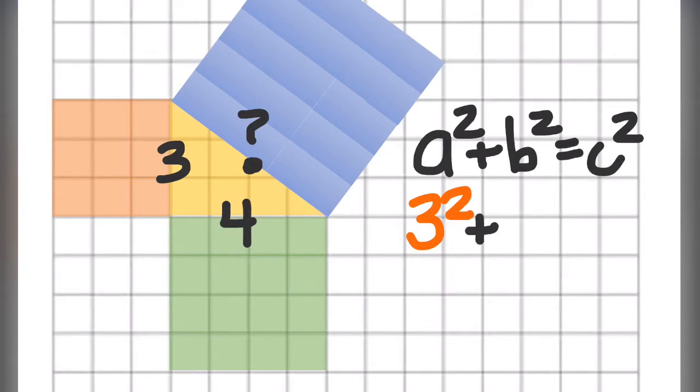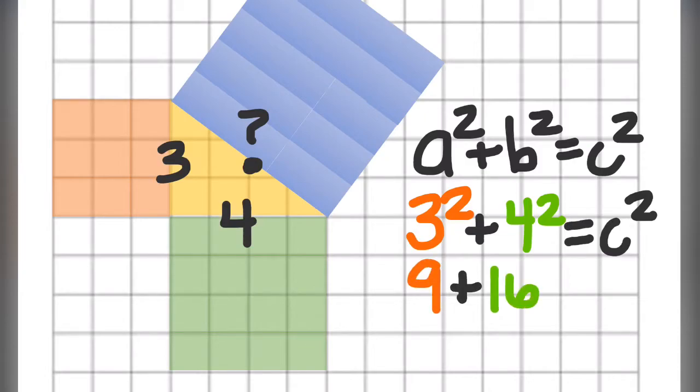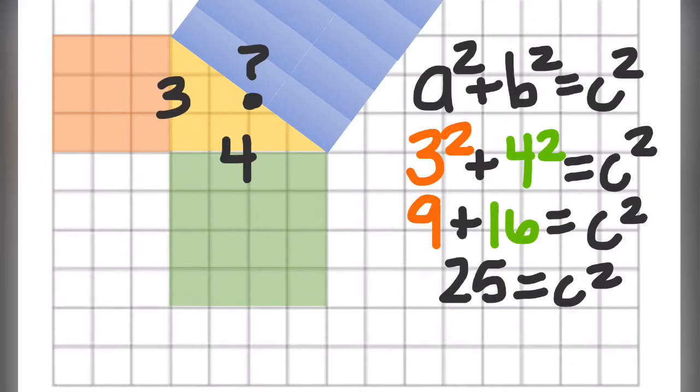Three squared, four squared, and C is unknown. Nine and 16. C is still unknown. 25. C is still unknown. Now we have C squared.